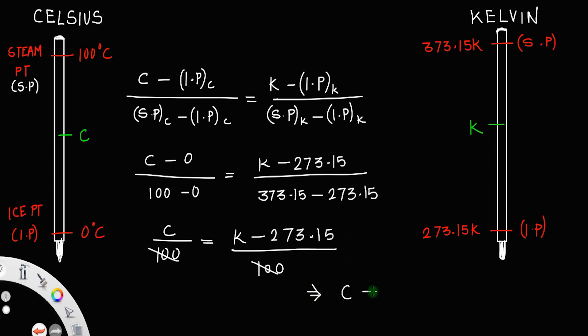we have the relationship C equals K minus 273.15. Or in other words, K equals C plus 273.15.